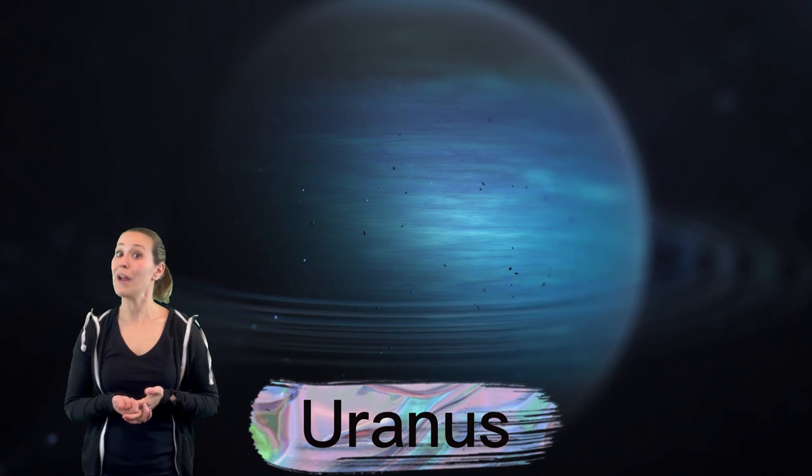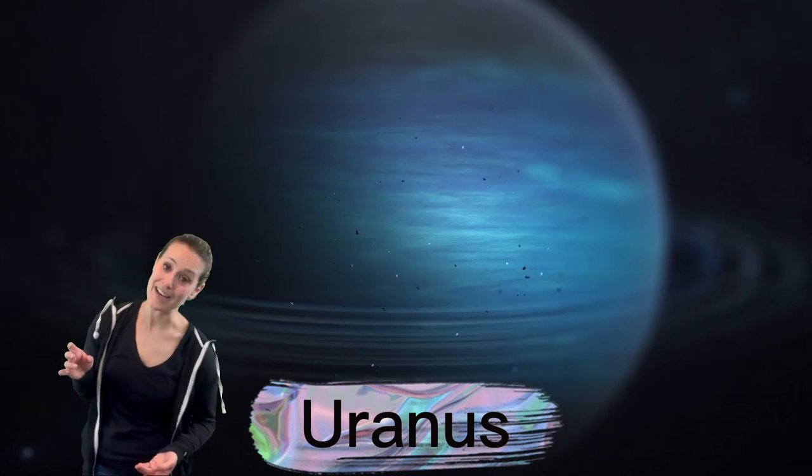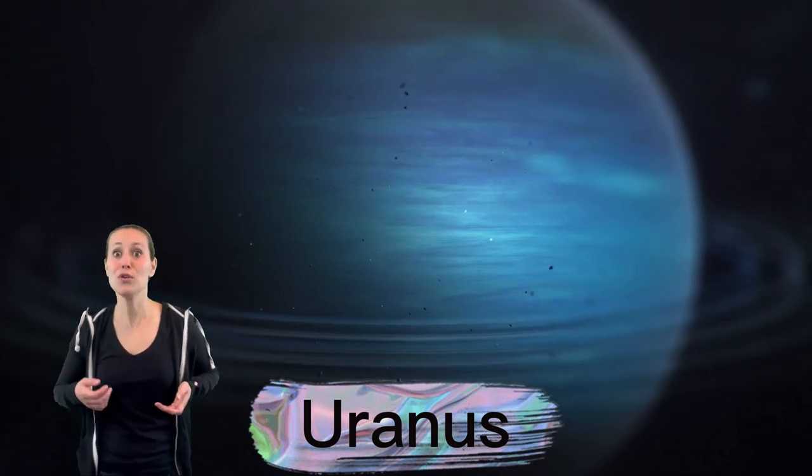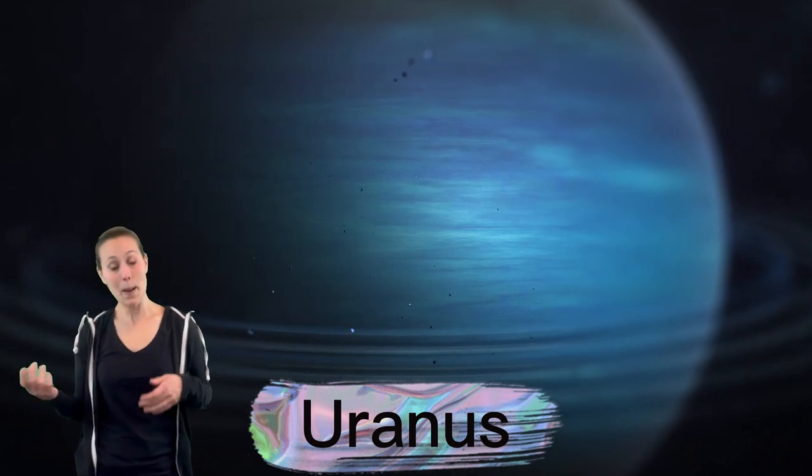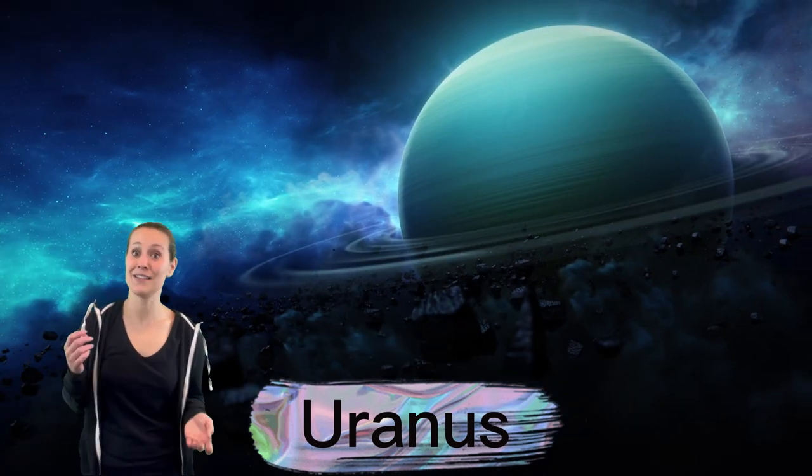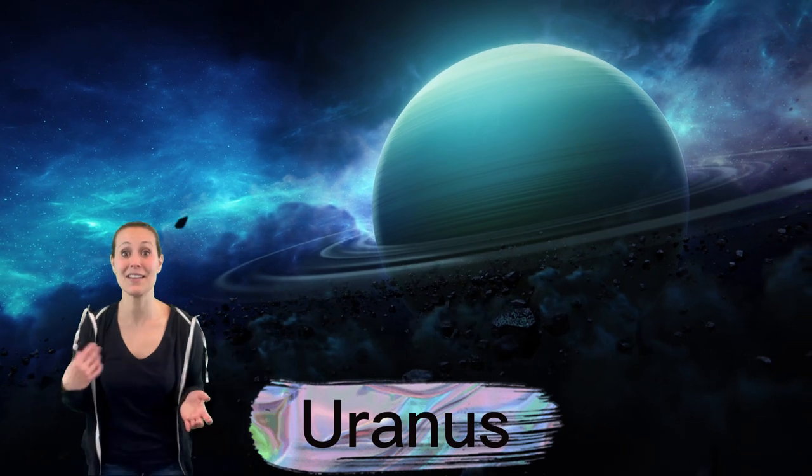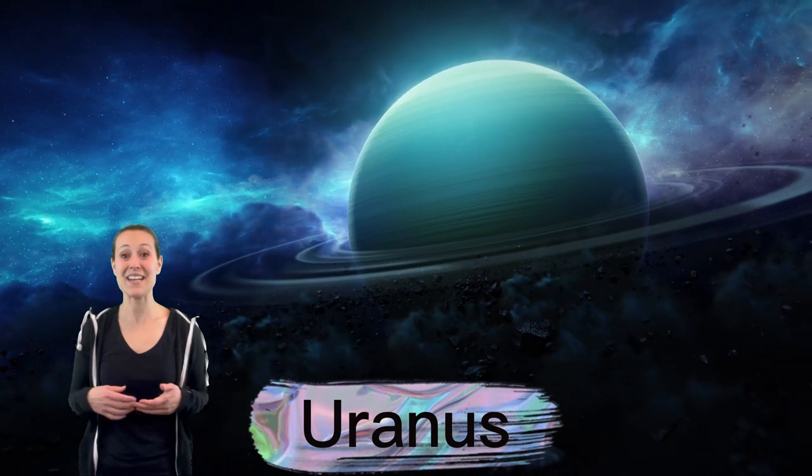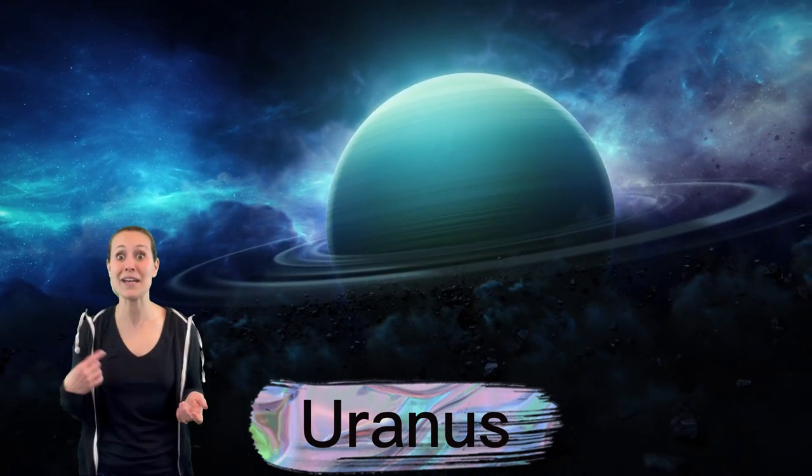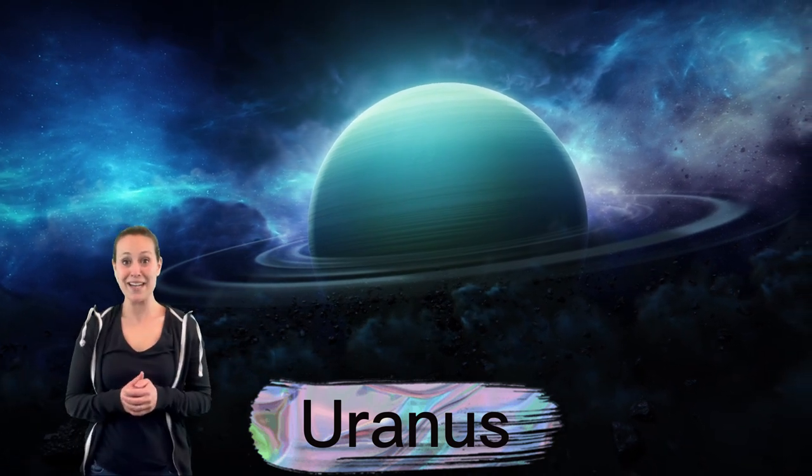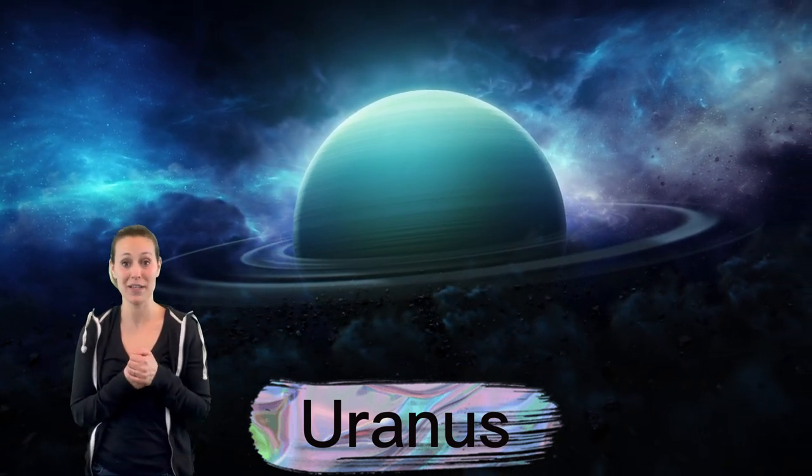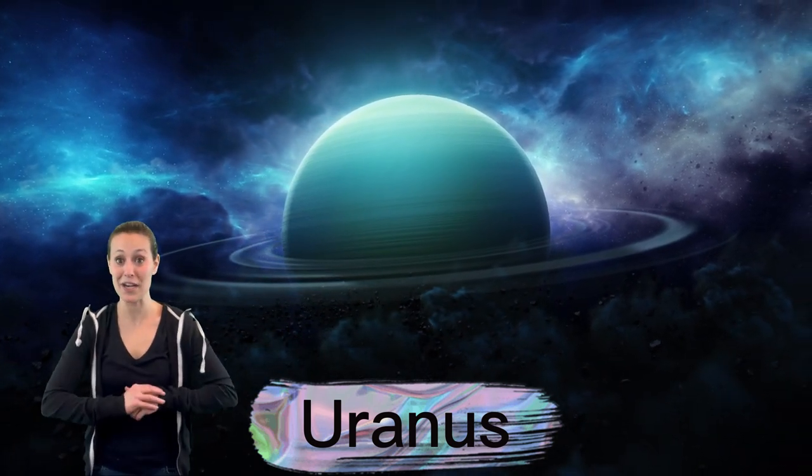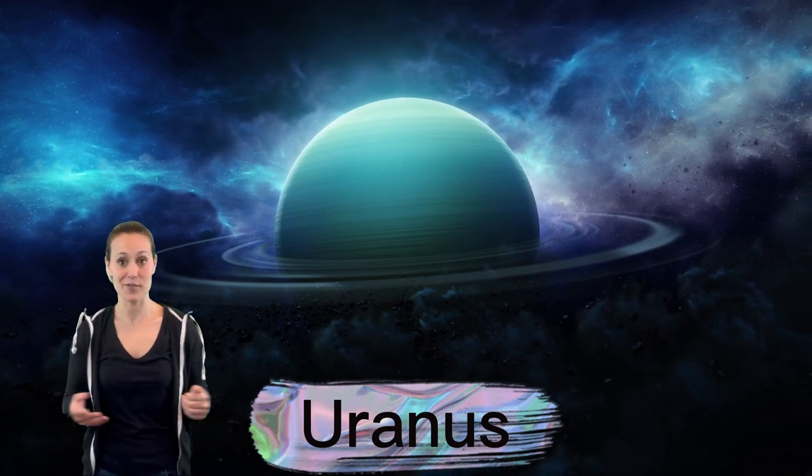Uranus is tipped on its side. Scientists think that a long, long time ago, a huge space object, like a planet, crashed into it and caused it to tip. It actually spins in the opposite way that Earth does, and it takes 84 Earth years for Uranus to orbit around the Sun. Uranus is the coldest of all the planets, and it actually has about 13 rings. They're just not as visible as Saturn's rings.